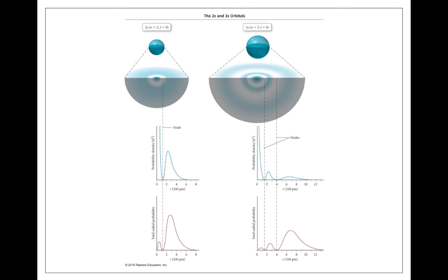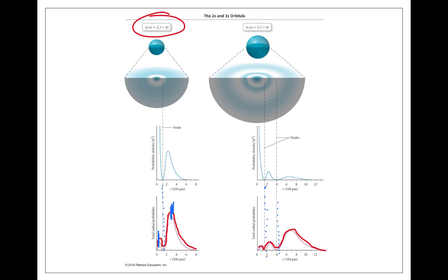For a 2s orbital, we've got a little bit of probability density, then a node, and it comes back up—two areas where we're likely to find electrons, with one area of zero probability between them. For the 3s orbital, we have three peaks of increasing size—it's a larger orbital the farther out we go—but now we have two nodes, two areas where we have zero probability density of finding an electron.